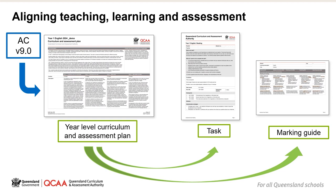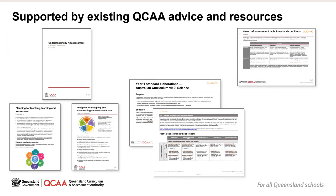Additional features include the ability to copy and edit an existing plan, the ability to review and seek feedback from colleagues, and a summary page that tracks coverage of the achievement standards and content descriptions, general capabilities, cross-curriculum priorities and focus areas for health and physical education across the year or band. Planning in the app is underpinned by a number of QCAA resources and advice documents, including standards elaborations and techniques and conditions, with links within the app to allow teachers to easily access these resources.